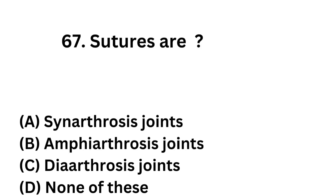Question number 67. Sutures are — that means, what are sutures? Option A: Synarthrosis joints. Option B: Amphiarthrosis joints. Option C: Diarthrosis joints. Option D: None of the above.